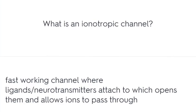What is an ionotropic channel? A fast-working channel where ligands and neurotransmitters attach, which opens the channel and allows ions to pass through.